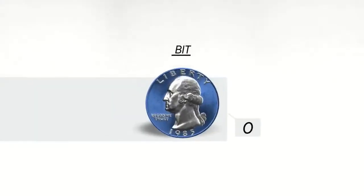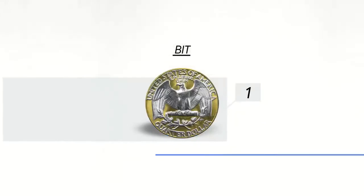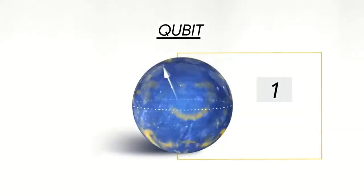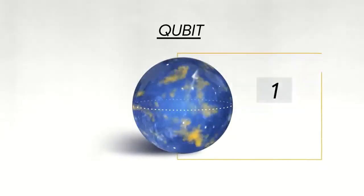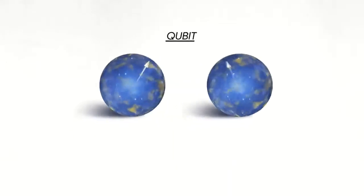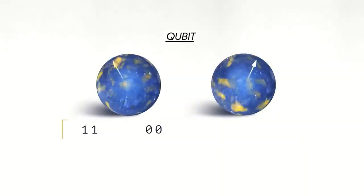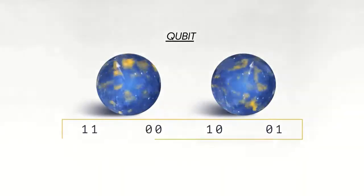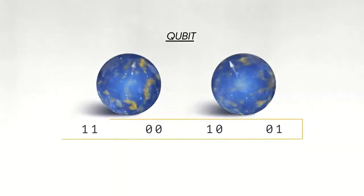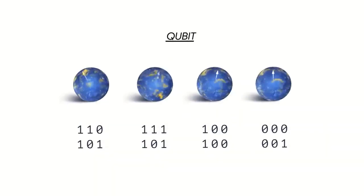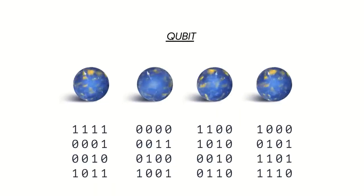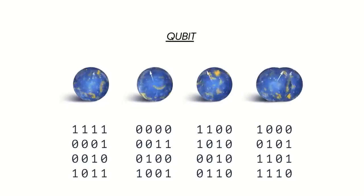The classical bit stores information as a zero or one, and a quantum bit can be both zero and one at the same time. If you have two quantum bits, there are four possible states that you can put in superposition. With three qubits it's eight, four qubits it's 16 — it grows exponentially.